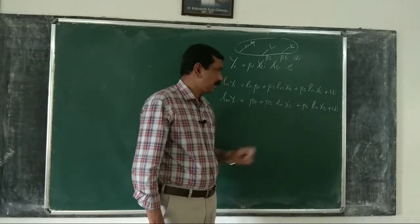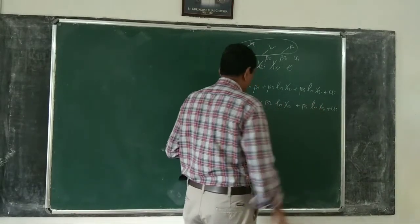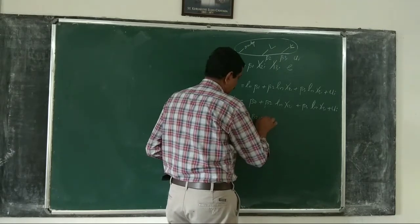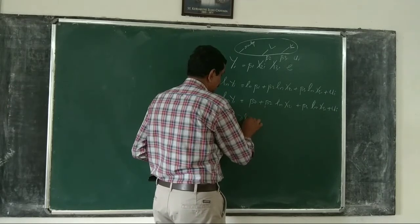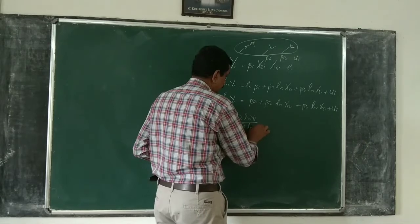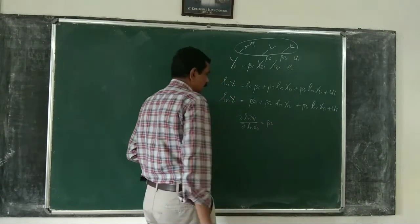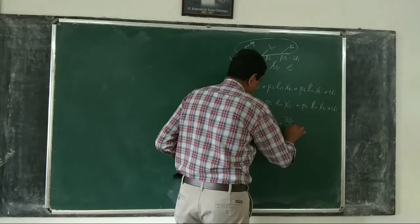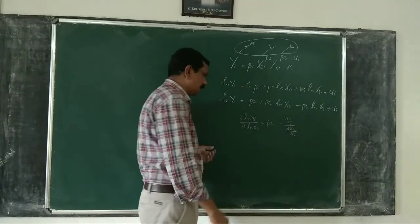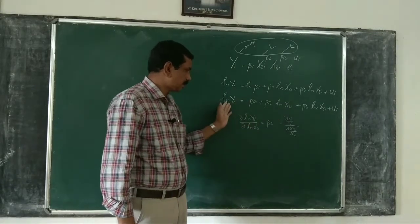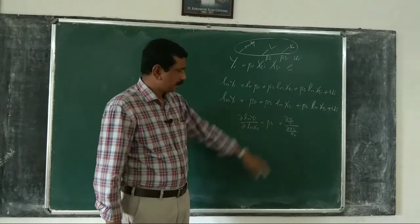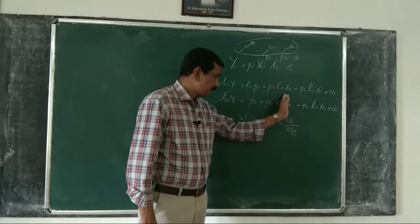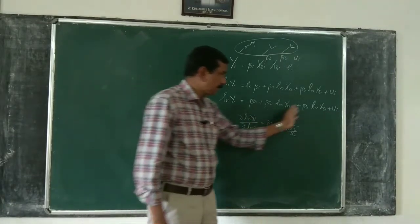As you know from your microeconomics course, beta2 is the partial elasticity of output with respect to labour: d(ln y_i)/d(ln x2i) = beta2, which equals (dy/y)/(dx2/x2) — that is, the elasticity of output with respect to x2. So beta2 measures the percentage change in output when there is a 1 percent change in x2, keeping x3 constant.